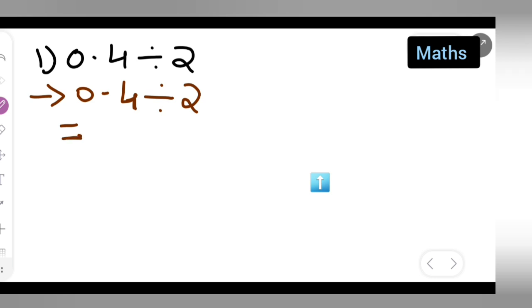Let us remove the decimal point. It is in the first place, right. So I will remove the decimal point by writing 4 upon 10 divide by 2.